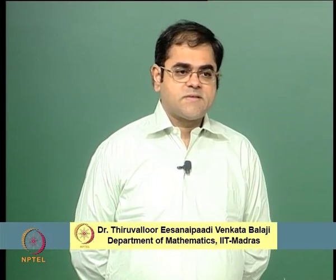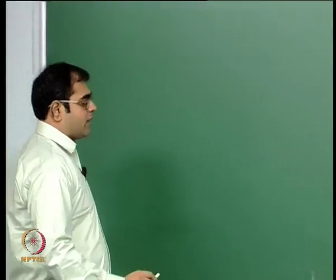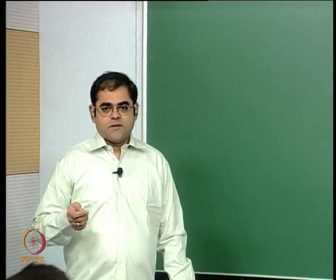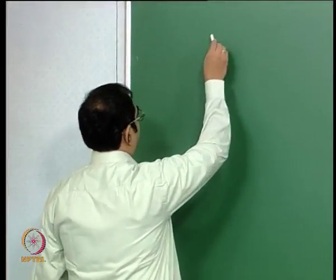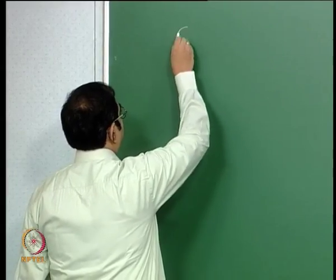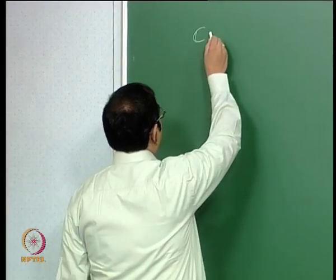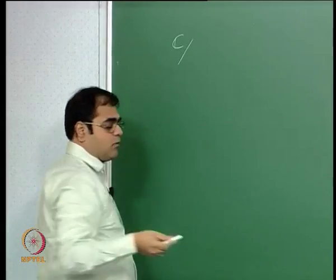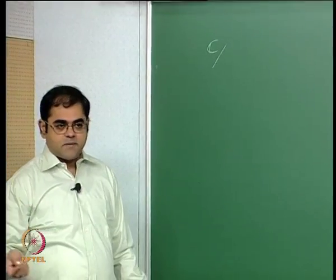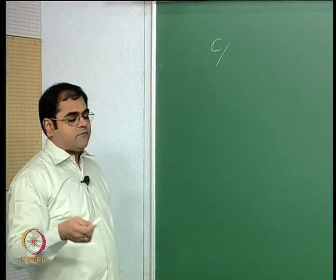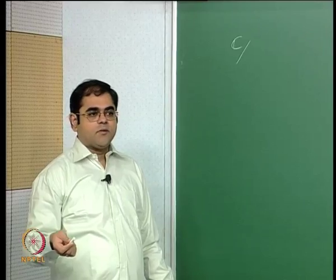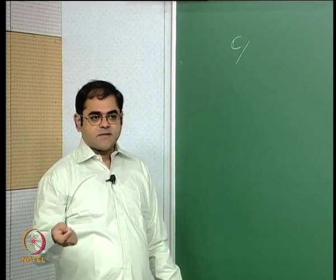Welcome to this fifth lecture. Let me briefly recall what we did in the last lecture: we were trying to give a Riemann surface structure on the cylinder. The way we did it was essentially we took the complex plane and went modulo the group of automorphisms of the complex plane, which is isomorphic to the integers under addition, and for the generator of the group we took a translation by a fixed vector.